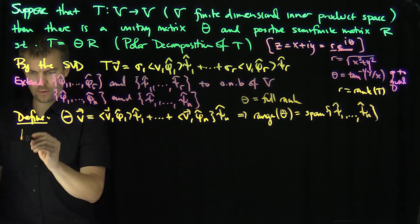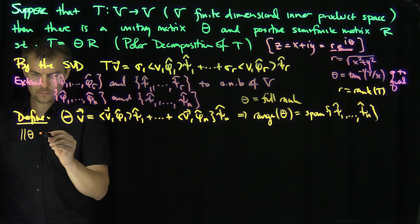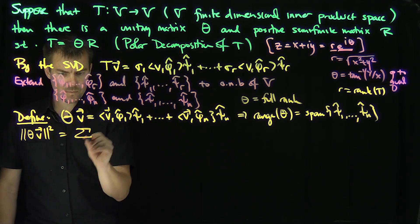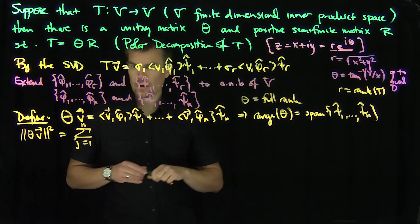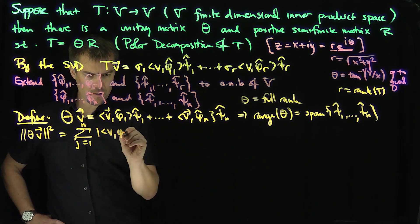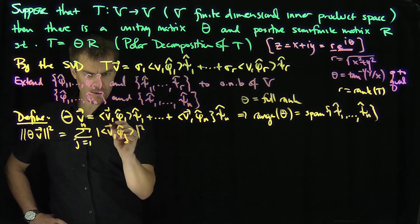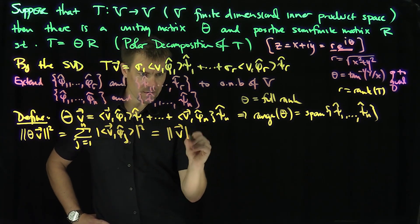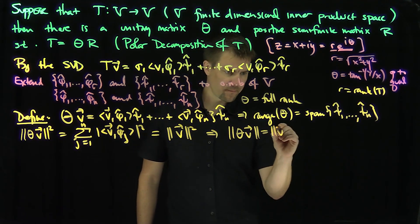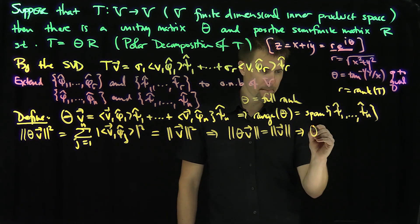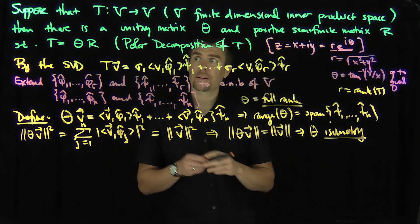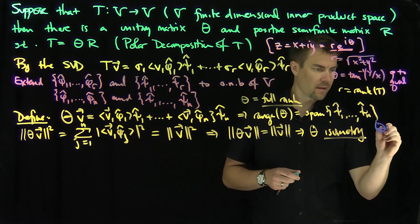Now, the norm of θV squared equals, by the Pythagorean theorem since the ψ̂_j are orthogonal, the sum from j = 1 to N of |⟨V, φ̂_j⟩|². Since {φ̂_j} is an orthonormal basis, that equals ‖V‖². This shows ‖θV‖ = ‖V‖, so θ is an isometry. An isometry that is full rank in the finite-dimensional case is unitary, so θ is unitary.